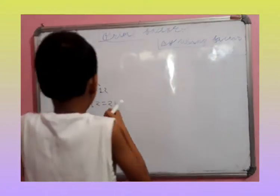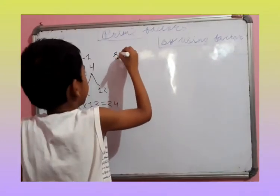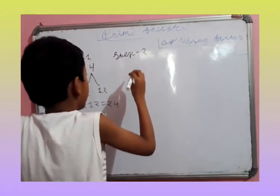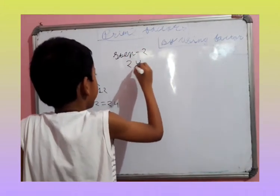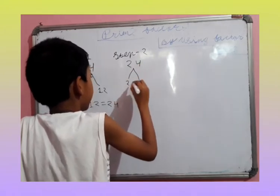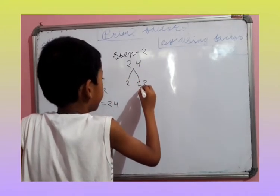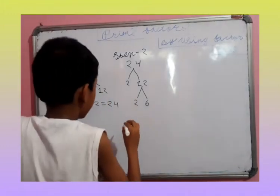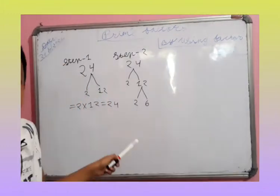Now, step 2. 24 divides into 2 and 12. Now, 12 divides into 2 and 6. We don't have to write it here.